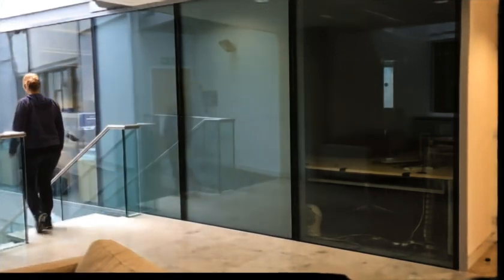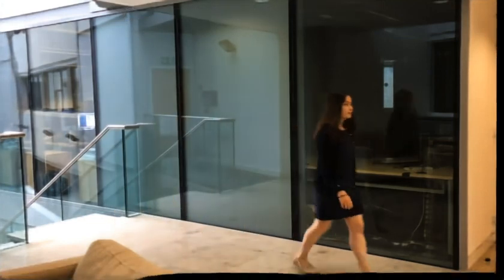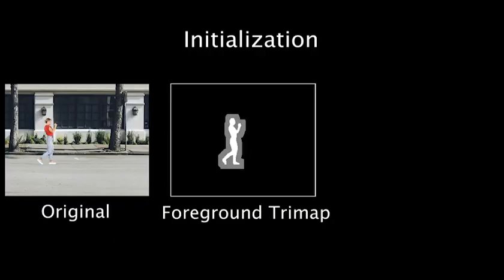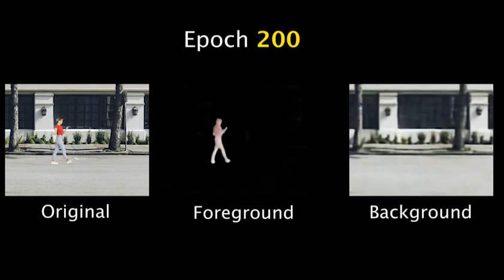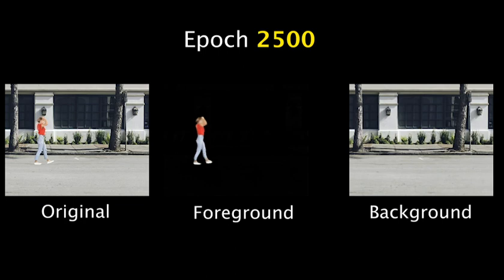Here we show that compositing without a person's layer removes the correlated effects of that person. We demonstrate the properties of the optimization with synthetic test cases. The optimization is initialized using a trimap derived from the person's UV coordinates. The network is trained over many epochs, progressively refining the result. Effects outside the input trimap are learned incrementally as the network trains.